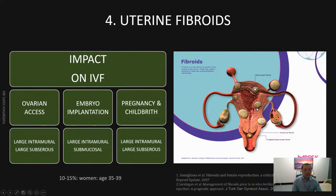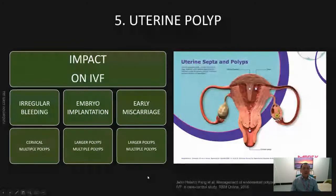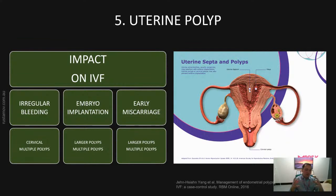Hence, patients who have a submucosal fibroid where the fibroid is distorting the cavity and protruding into it — it's best to remove or treat the fibroid before embryo transfer. The next pathology is uterine polyp. A uterine polyp is a benign growth inside the uterine cavity. The main impact of uterine polyp in IVF is reduction of implantation, because a polyp sitting inside the cavity can cause localized inflammation and contraction of muscles inside the uterus. An embryo can also implant on top of the polyp, where it doesn't have access to blood vessels and fails to develop.